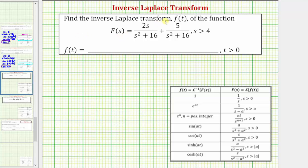We're going to find the inverse Laplace transform of big F of s in order to find the function f of t. Beginning with the given function, big F of s equals two s divided by the quantity s squared plus 16, plus five divided by the quantity s squared plus 16.